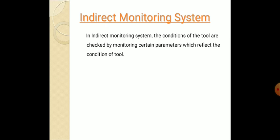Next is the indirect monitoring system. In indirect monitoring system the condition of tools are checked by the monitoring certain parameters which reflect to the condition of the tools. In this we have certain standard parameters in which the given data is compiled with the standard parameters to give out the required result or the output.